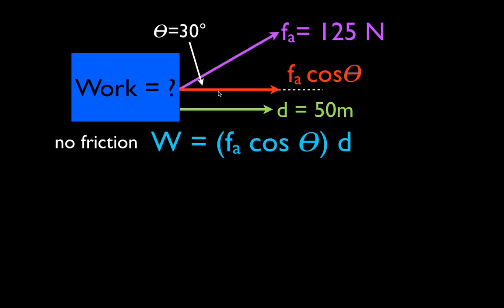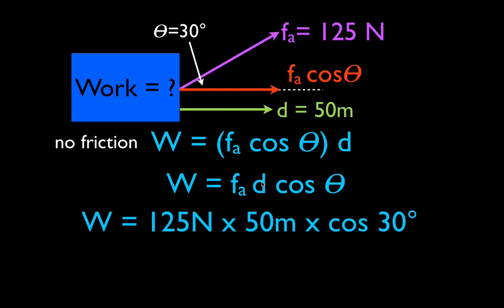That gives us the equation that the work is the force times the distance. Normally you don't see it written like this, but I just want to point out that we have Fa cosine theta — that gives us the component of the force that's parallel to the displacement — and then we simply multiply it times the distance. Normally in your textbook you see it written as W = Fd cosine theta. That's the equation for work. It's F cosine of theta that gives us the component of the force parallel to the displacement. So: 125 N times 50 meters times cosine of 30 degrees gives us an answer of 937.5 joules.